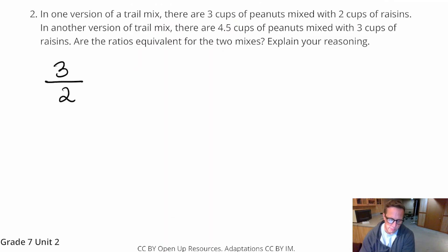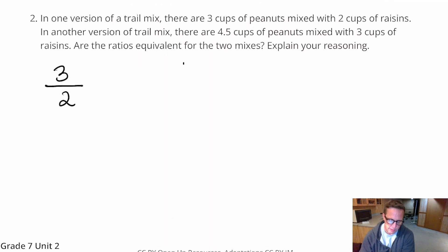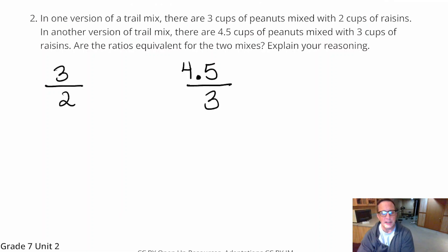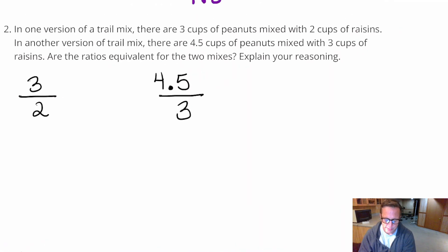Now the other one, we've got four and a half, we've got four and a half cups of peanuts over three cups of raisins. Now I'm just looking at that, you're like, no way. It doesn't look right. But that's because you've got a decimal in there, that's ugly. You don't really want to have decimals and fractions. That is usually a bad sight.